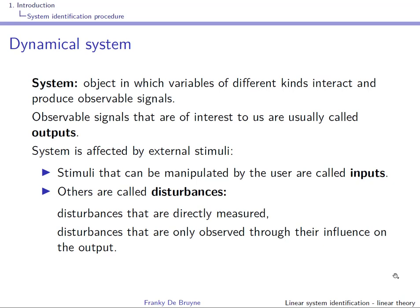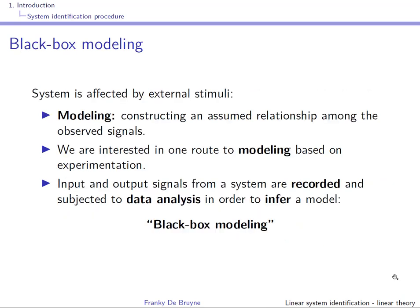Measured disturbances can only be observed on the output — they could be added as inputs but cannot be manipulated by the user. Unmeasured disturbances also can only be observed on the output. In this course, disturbances will be modeled as stochastic processes. We are interested in constructing an assumed relation among observed signals based on experimentation — data-driven modeling — where input and output signals are recorded and subjected to data analysis to infer a model.